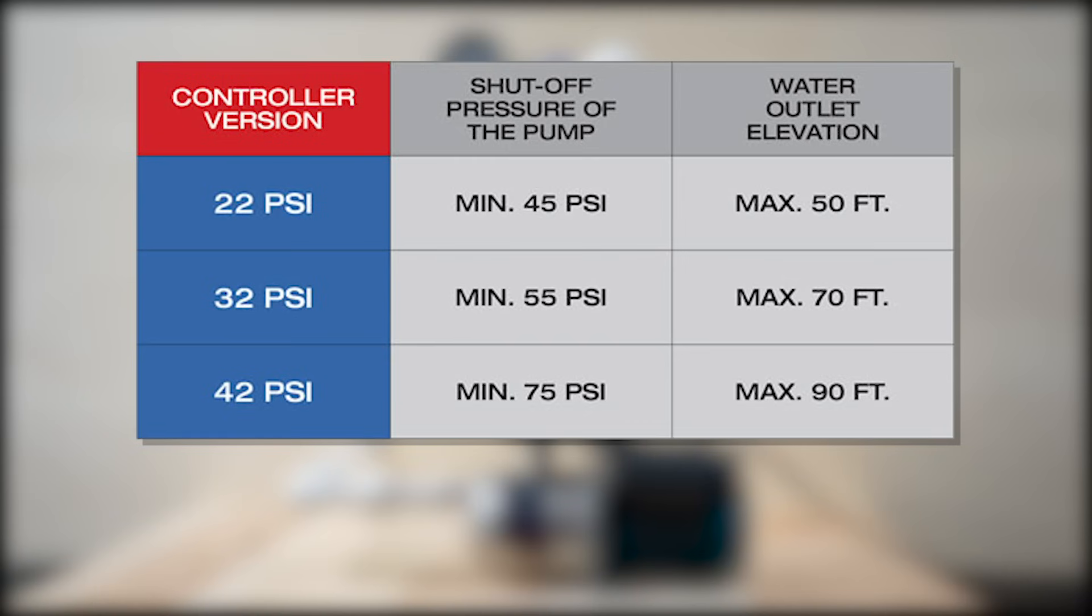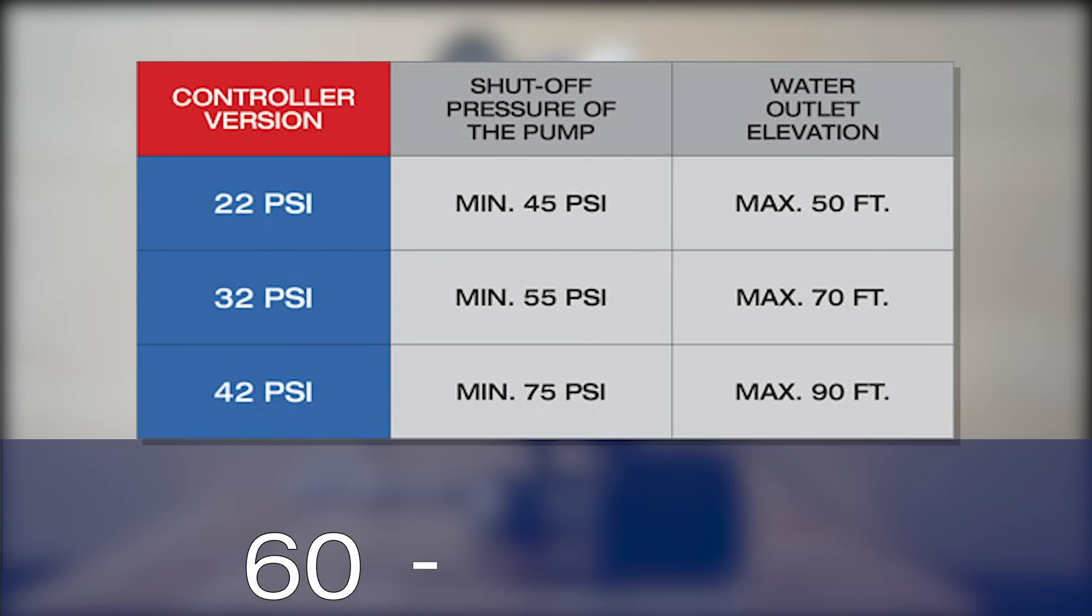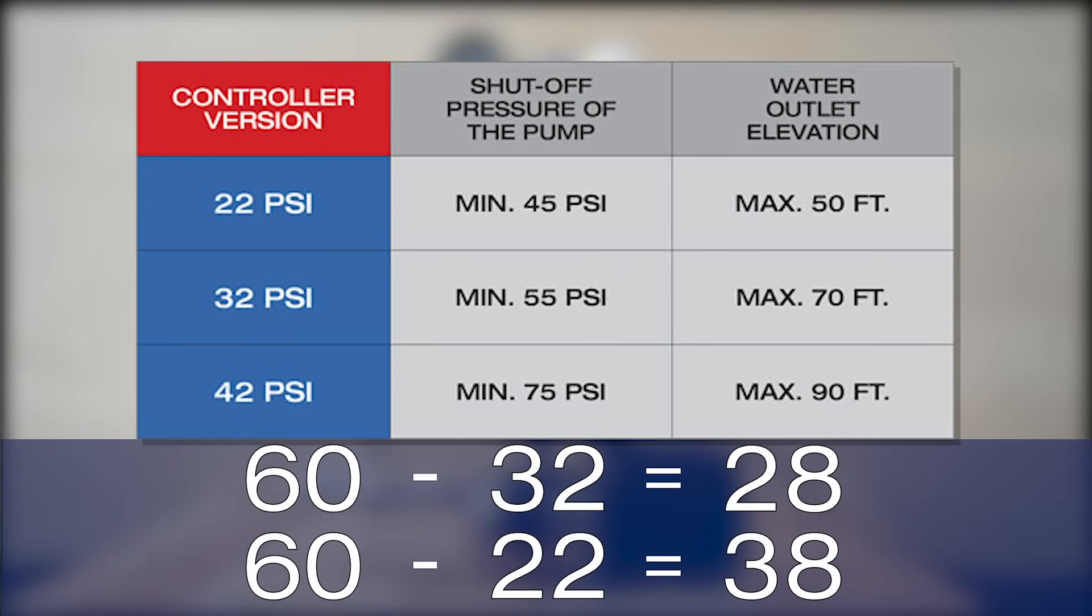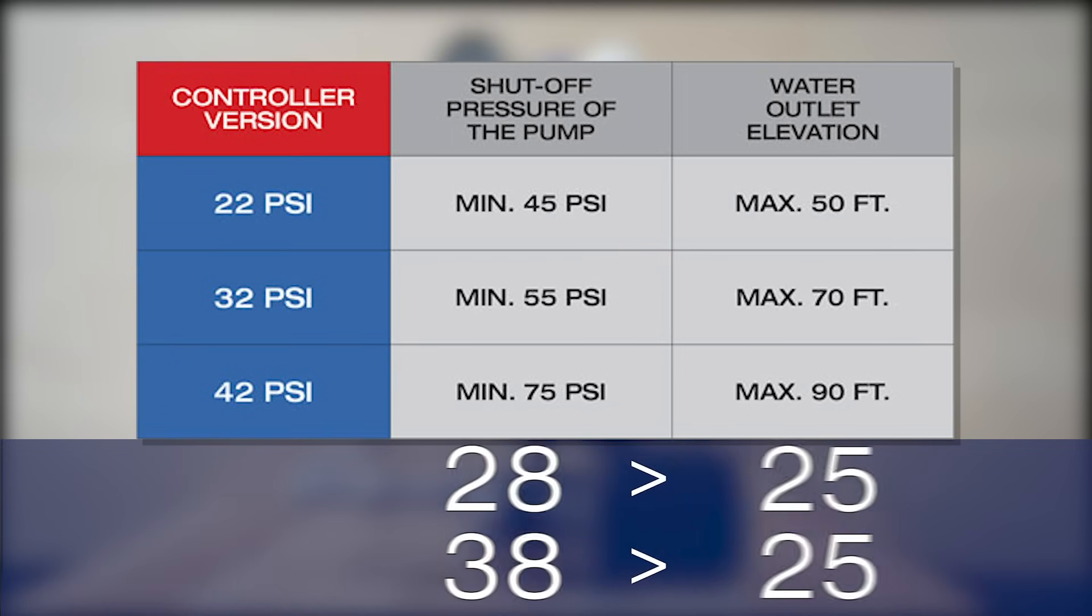For example, if the shut-off pressure of your pump is 60 psi, then the maximum starting pressure controller should be the 32. You could also use the 22 psi since the difference between the shut-off pressure is still greater than 25.